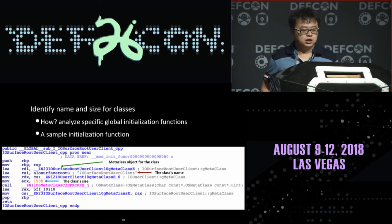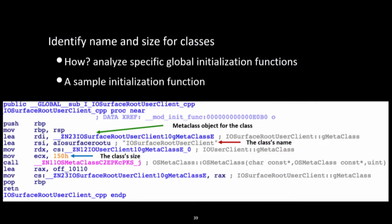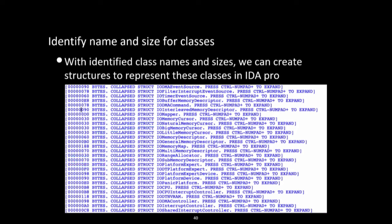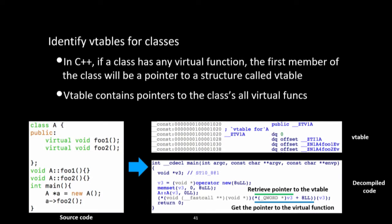RilK identifies names and sizes for classes from specific initialization functions. As the figure shows, a sample initialization function contains the class name and size. With these identified class names and sizes, we can create structures in IDA Pro to represent these classes.